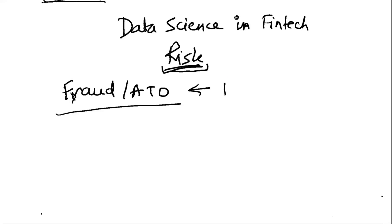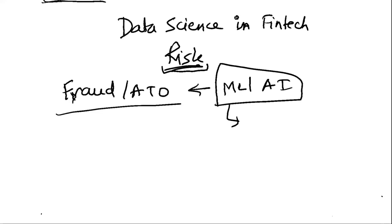Fraudulent transactions, fraudulent checks, account takeovers — these are cases where there is a huge opportunity to use machine learning and AI. The data is so large and fairly unbalanced, because there's a small percentage of transactions that are actually fraudulent. That's where machine learning and AI provides very significant opportunity versus traditional statistics, regression, and decision trees.